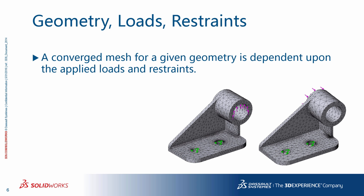Even though meshing is a discretization of the geometry, a converged mesh is not only dependent on the geometry, but also the applied loads and the restraints. As an example, because load direction is different, the stress distribution is naturally different, so if you perform the H-adaptive method on the study, you get mesh refinements in different regions. So you define a converged mesh for a given complete setup, and not just a geometry.